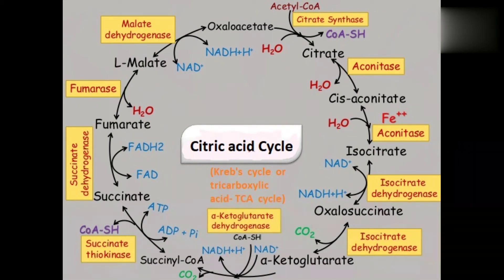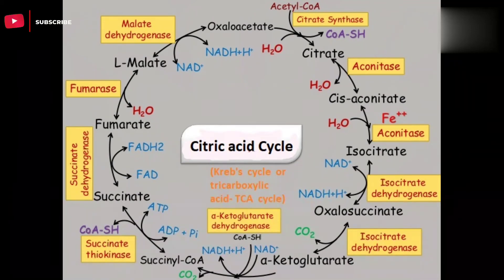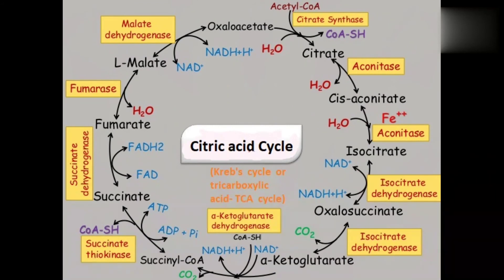The last step is malate being converted into oxaloacetate with the help of malate dehydrogenase. Then oxaloacetate is converted back into citrate with the help of citrate synthase, completing the cycle. So the full cycle goes: acetyl CoA → citrate → isocitrate → oxalosuccinate → alpha-ketoglutarate → succinyl CoA → succinate → fumarate → malate → oxaloacetate. Eight steps, eight enzymes.